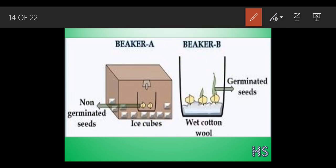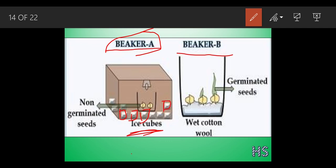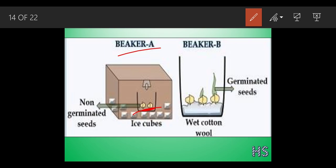Now let's perform this exercise. This is beaker A and beaker B. Inside beaker A we can see white ice cubes kept inside this box, and the box is closed. Some seeds have been kept in it. After a day or two we can see that the seeds didn't germinate - they proved to be non-germinated seeds.